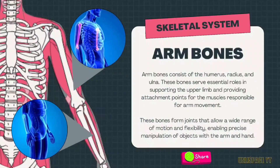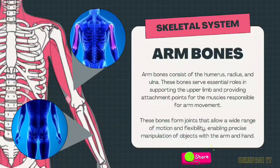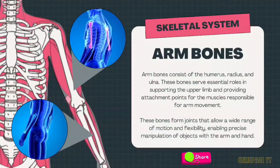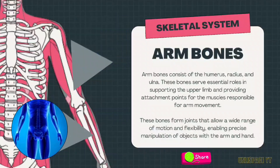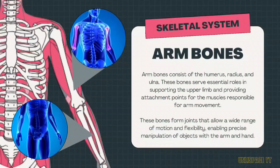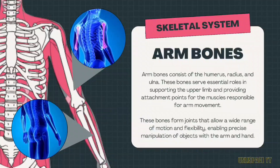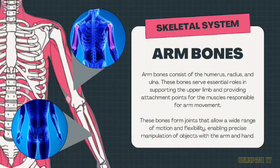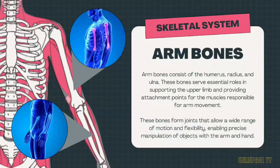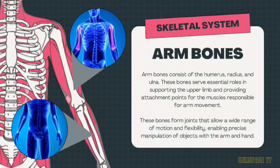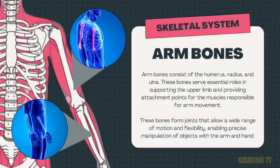Arm bones consist of the humerus, radius, and ulna. These bones serve essential roles in supporting the upper limb and providing attachment points for the muscles responsible for arm movement. These bones form joints that allow a wide range of motion and flexibility, enabling precise manipulation of objects with the arm and hand.